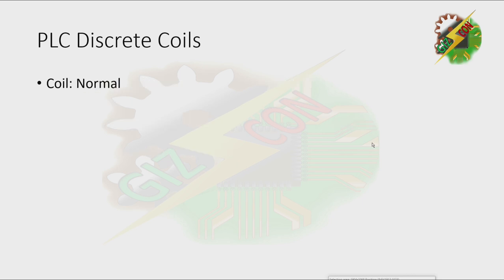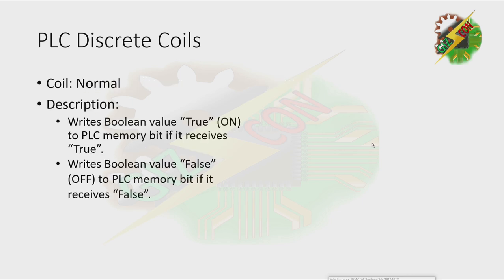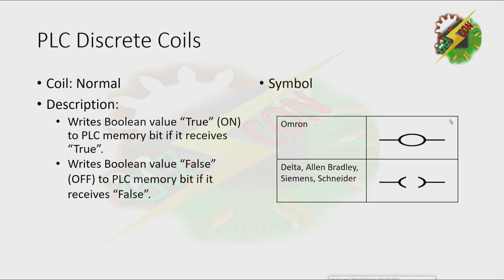And we have the normal coil. It writes a boolean value true or on to the PLC memory bit if it receives true, and writes boolean value false or off to the PLC memory bit if it receives false. This is the symbol — we have different symbols depending on the brand of the PLC.